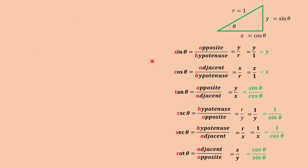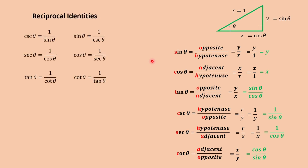Fundamental trigonometric identities can be divided into several groups. These are the reciprocal identities: cosecant theta is equal to 1 over sine theta; secant theta is equal to 1 over cosine theta; tangent theta is equal to 1 over cotangent theta. Also, sine theta is equal to 1 over cosecant theta; cosine theta is equal to 1 over secant theta; and cotangent theta is equal to 1 over tangent theta.